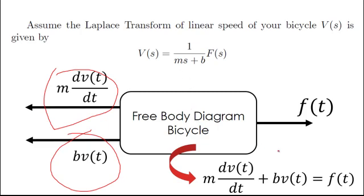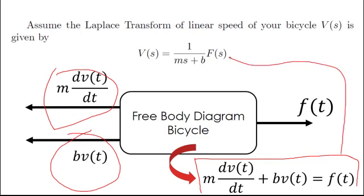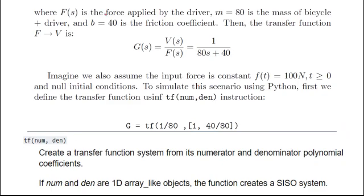If you write the differential equation, in this case it's just this differential equation that you have here. If you apply Laplace transform into this differential equation assuming null initial conditions, you have this relationship here between the speed of your bicycle and the force. We can assume that the mass of the bicycle plus the driver is 80, and b = 40 is the friction coefficient. Then the transfer function will be this one.